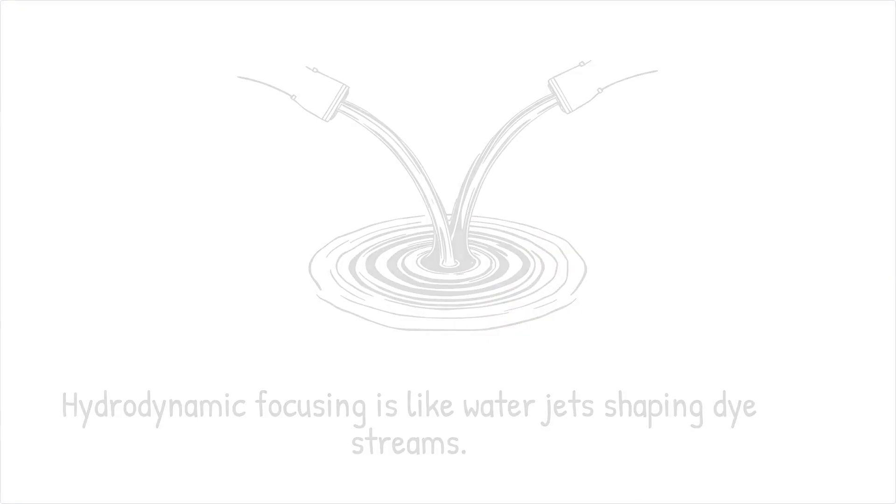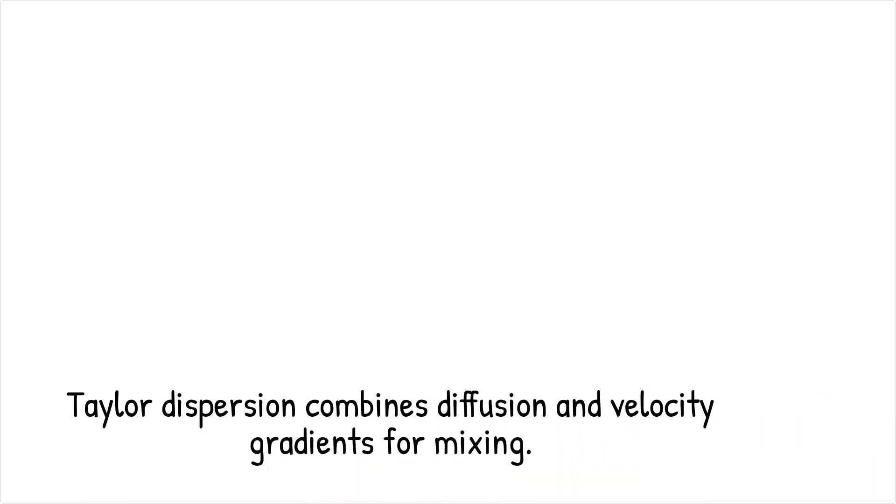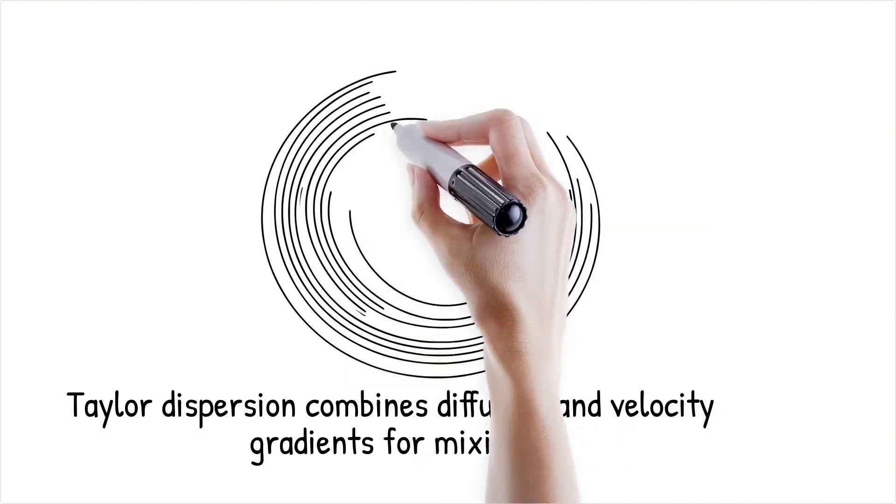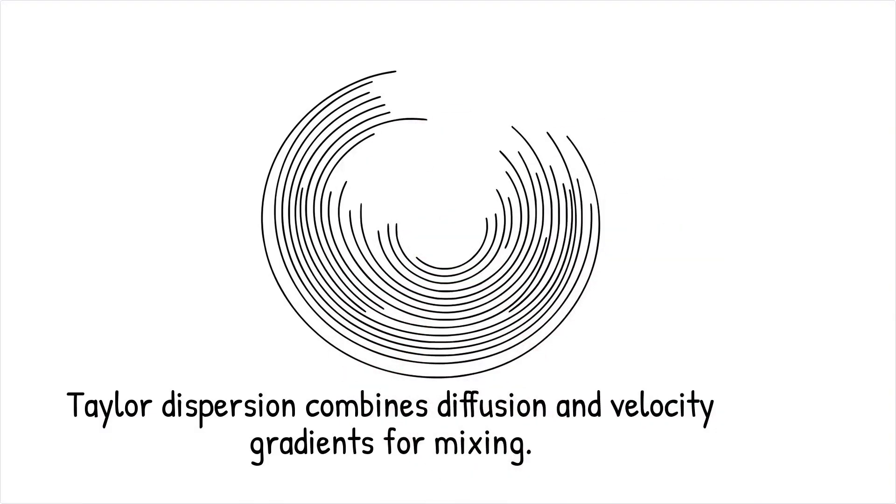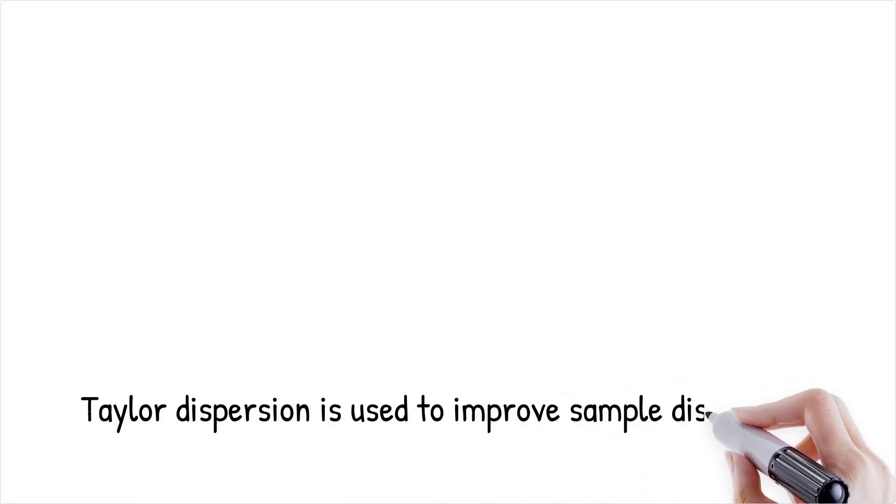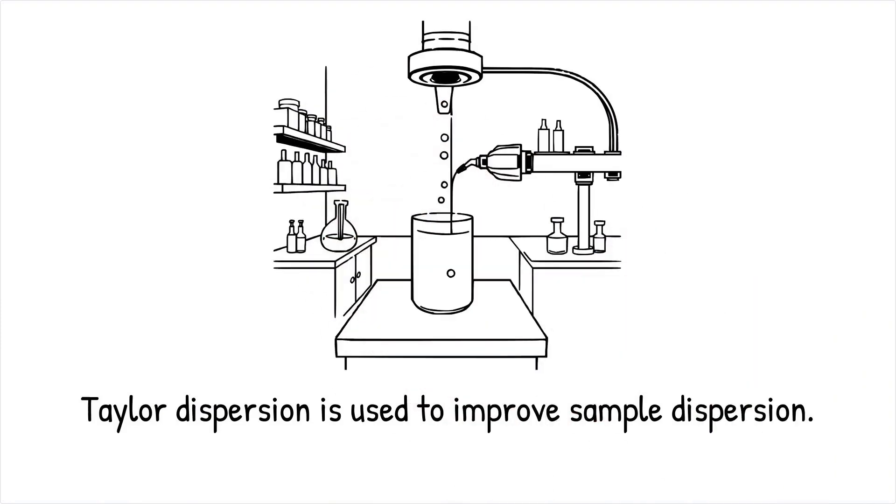Taylor dispersion exploits the interaction between molecular diffusion and velocity gradients in microchannels, leading to enhanced mixing. In pressure-driven flows, solutes experience stretching effects due to velocity variations, increasing the rate of molecular diffusion. This phenomenon is widely used in analytical chemistry to improve sample dispersion and reduce concentration gradients.